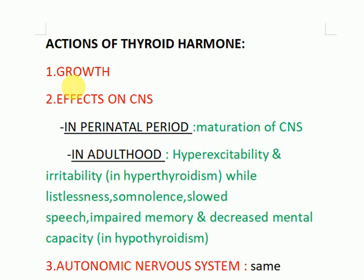Thyroid hormone stimulates bone maturation through ossification and fusion of the growth plate. In thyroid hormone deficiency, bone age is less than the chronological age because bone maturation is decreased. The second action is on the central nervous system: in the perinatal period, thyroid hormone affects CNS maturation. In case of deficiency, there is irreversible mental retardation, and since there is a very brief perinatal period, screening for neonatal hypothyroidism is mandatory.